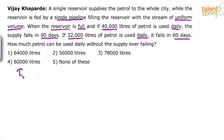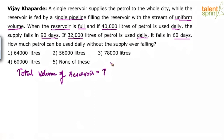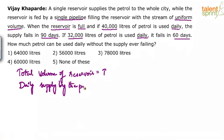Let us assume that the total volume of the reservoir is T. The daily supply by the pipeline — let's assume the daily supply from this pipeline is S.